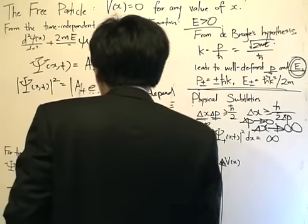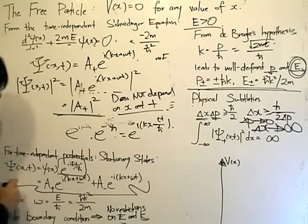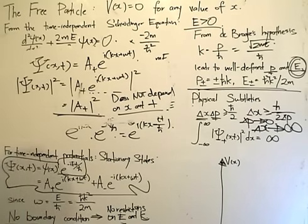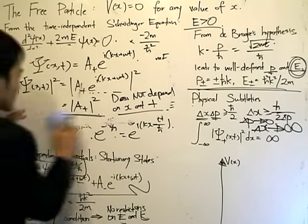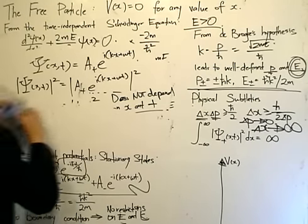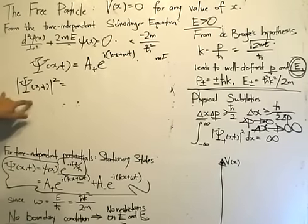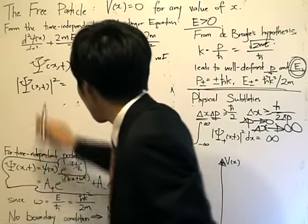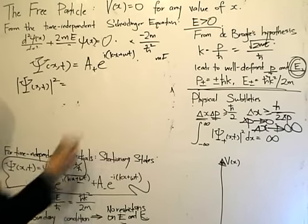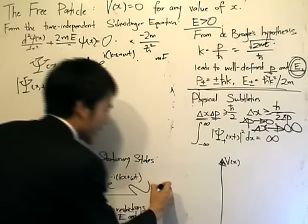Now, what's the other one? The other one is sketching the probability density function. So now I'm going to take both solutions this time and sketch the probability density. The probability density of capital Psi(x, t) is given by this one over here. I can write it as that — and we found out it's also oscillating.